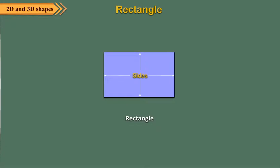Rectangle. A rectangle has four sides. The opposite sides of a rectangle are equal. It has four vertices.